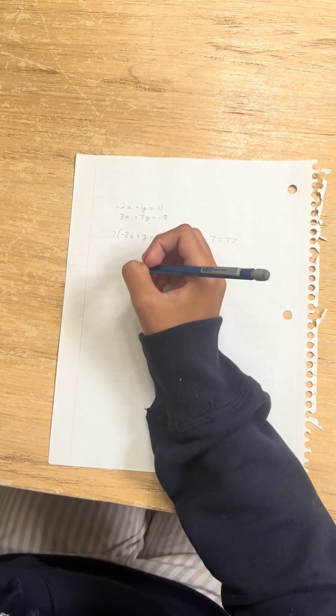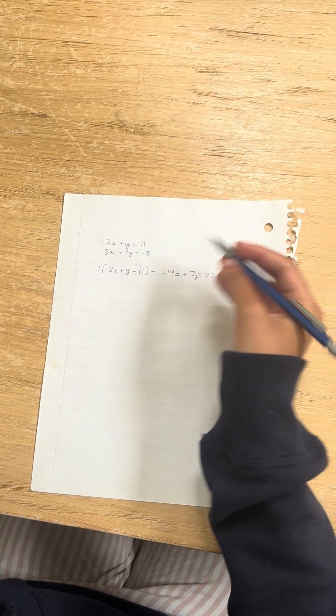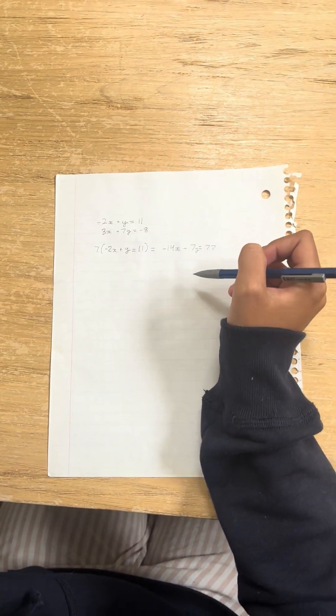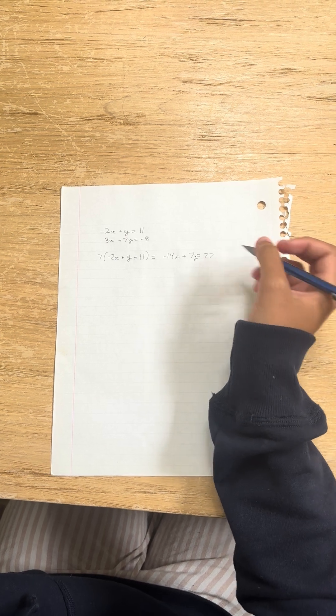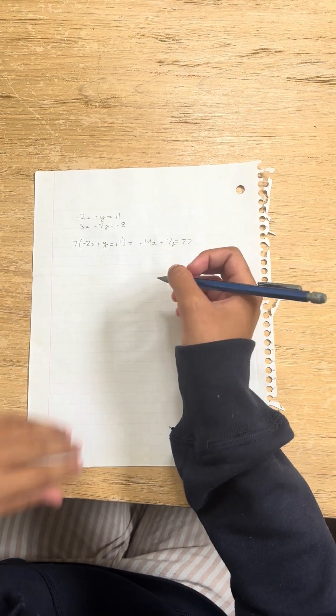And now we're going to subtract the equations because both of the equations have plus 7y. And if we add them, then we'll just get 14y. We need to get them to equal 0.